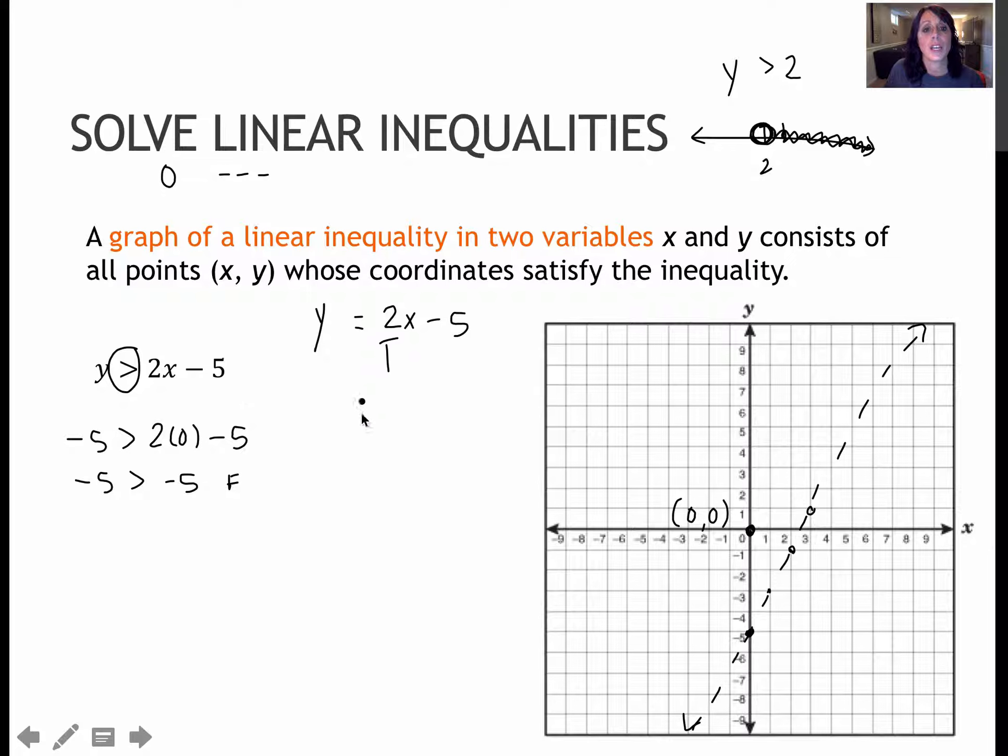I'm going to plug that value in, so I'm going to plug in 0 for y, I'm going to plug in 0 for x, and I get 0 is greater than 2 times 0, which is 0, minus 5. So 0 is greater than negative 5. True or false?